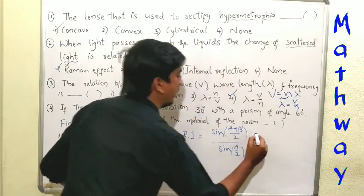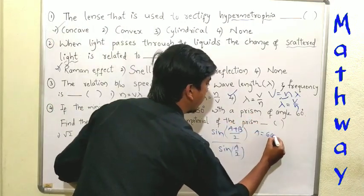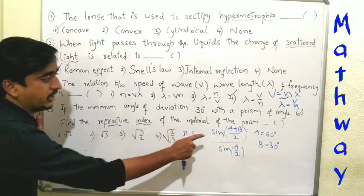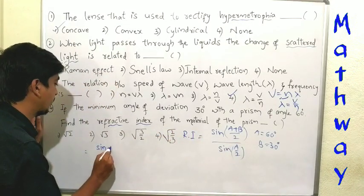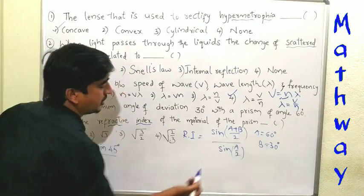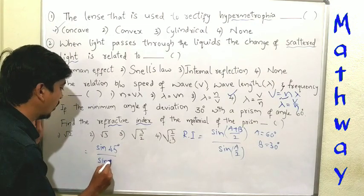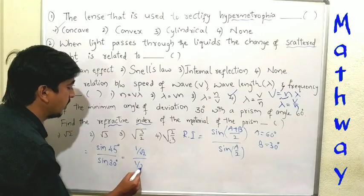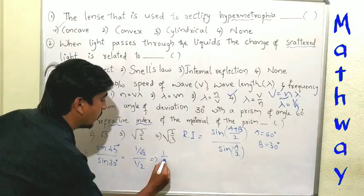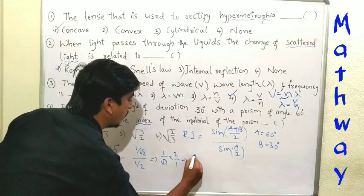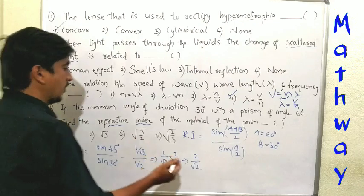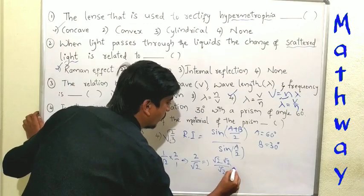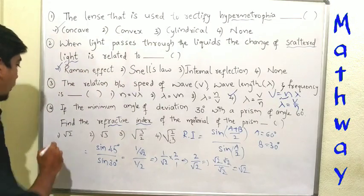We will take A and B values. Here A is the prism angle, that is 60 degrees, and B is the minimum deviation, 30 degrees. So sin((60 + 30) by 2) divided by sin(60 by 2) equals sin 45 divided by sin 30. Sin 45 is 1 by root 2, and sin 30 is 1 by 2. So 1 by root 2 into 2 by 1 equals 2 by root 2, which equals root 2. So root 2 is the correct answer. Option one is correct.